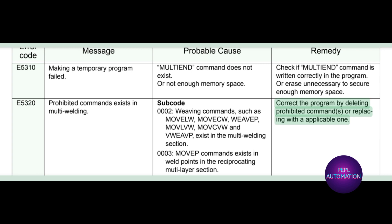E5320: prohibited commands exist in multi-welding. Subcode 0009: after ARC-ON-Command, the program ends with no ARC-OFF-Command, or no MOV command exists in the section from the beginning of the program to ARC-ON. Subcode 0010: keep position commands exist in the reciprocating multi-layer section. Subcode 0011: preset WLD commands exist in a weld section of the multi-layer section.